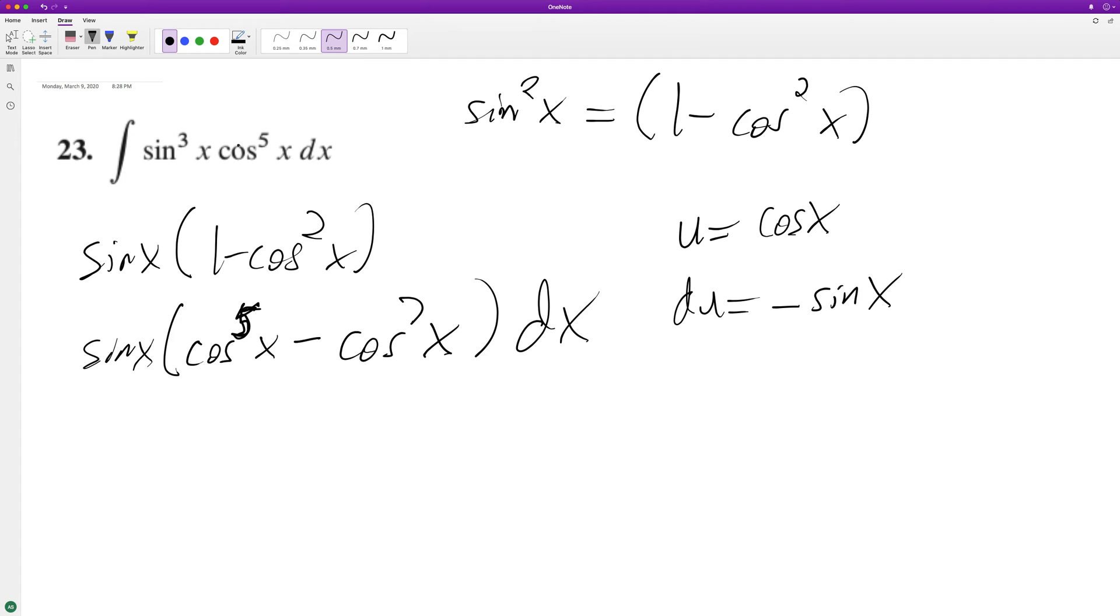So we have a negative out here because there's no negative. And then we have u to the fifth minus u to the seventh du.